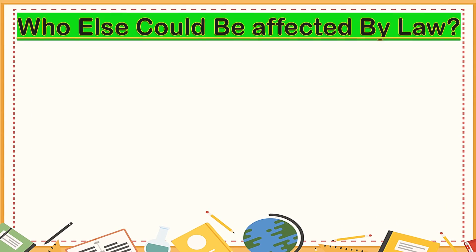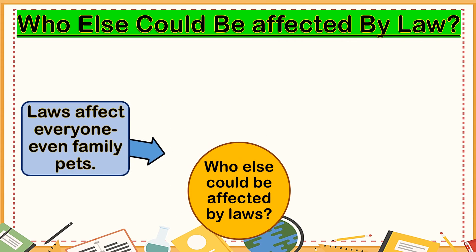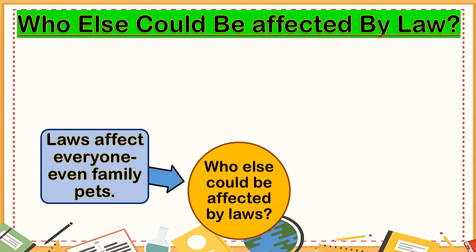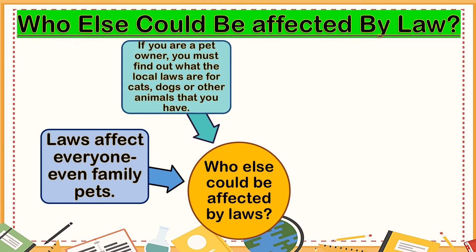Let us discuss who else could be affected by law. Laws affect everyone, even family pets. If you're a pet owner, you have to go to the local government office to know what you can and cannot do when you have pets. You must find out what the local laws are for cats, dogs, or other animals that you have. Remember, ignorance of the law excuses no one — you cannot say you did not know. No one is above the law.